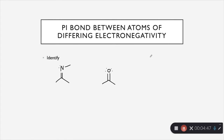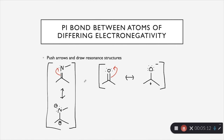Our next pattern is pi bonds between atoms of differing electronegativity. In the first example, we have a carbon with a pi bond between it and a nitrogen — nitrogen is much more electronegative than carbon. In the second example, we have a carbon with a pi bond between it and an oxygen. For the arrow pushing of this pattern, in every single case you are going to push the electrons from the double bond up to the more electronegative atom, creating a new lone pair on the electronegative atom. Check your formal charges, and the same arrow direction applies in both examples.